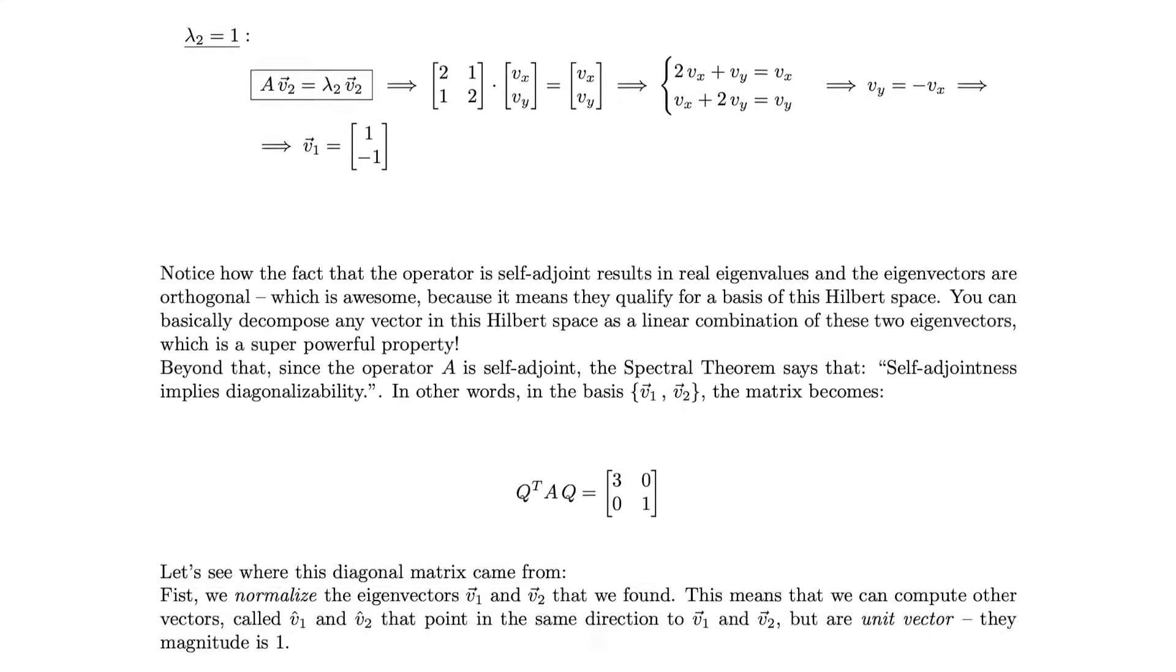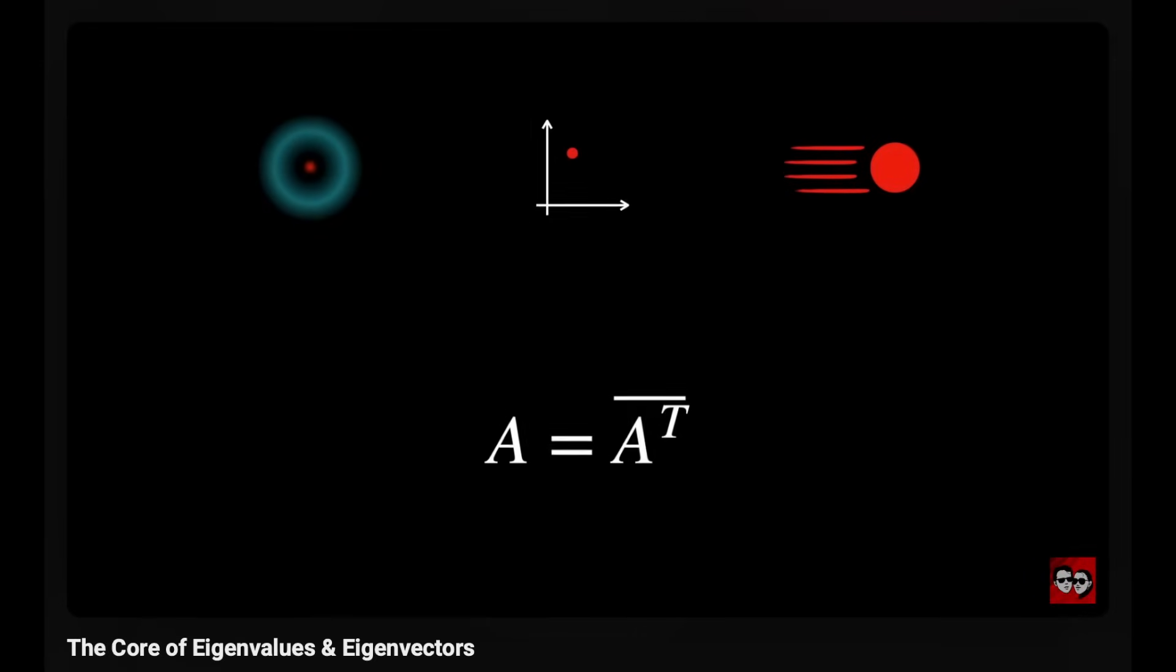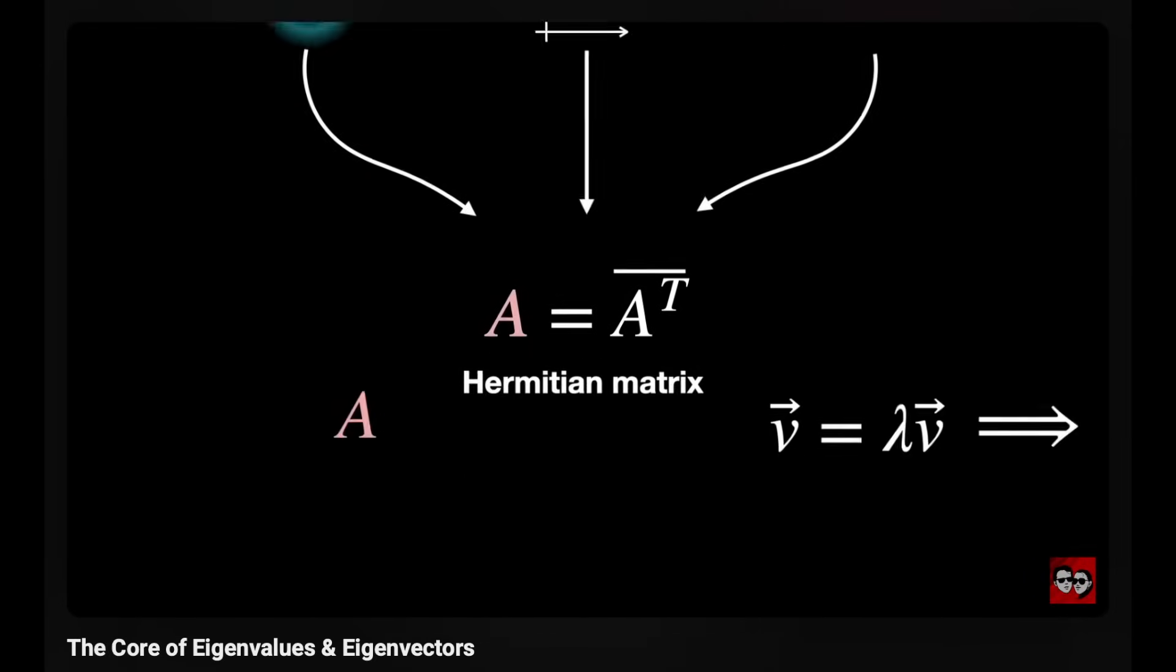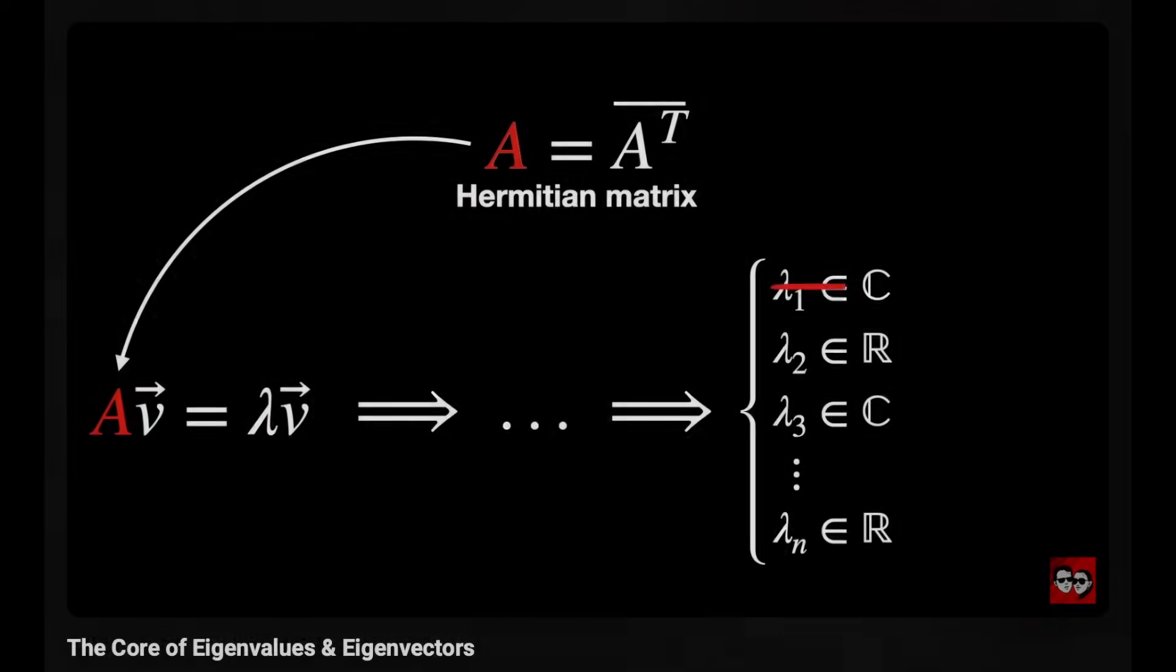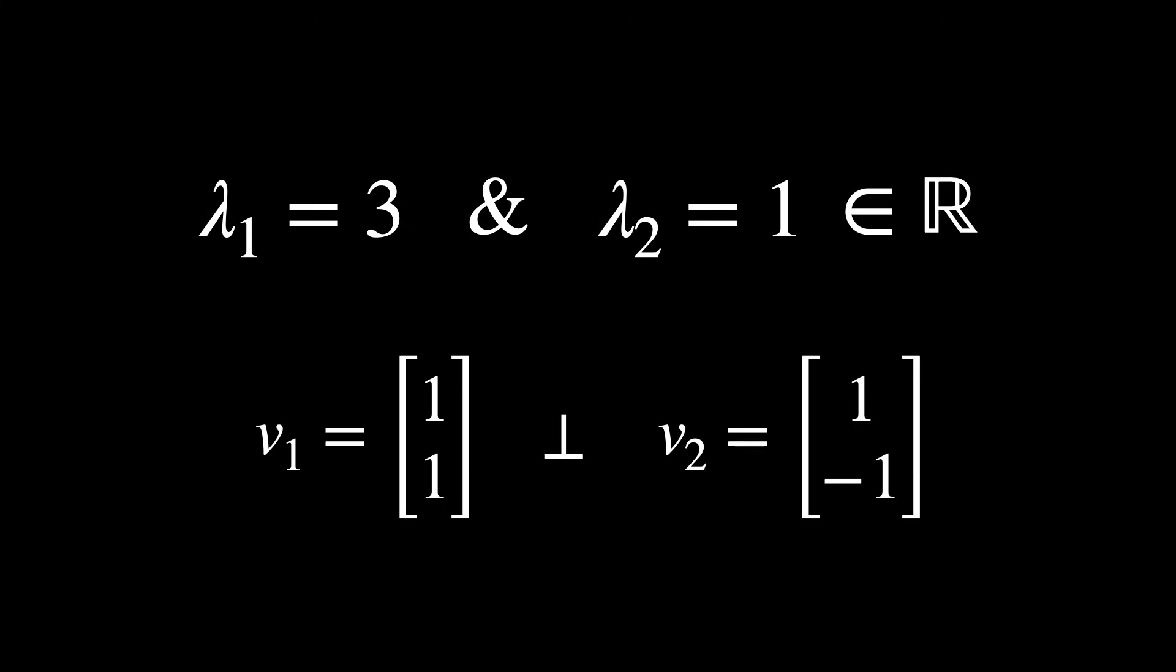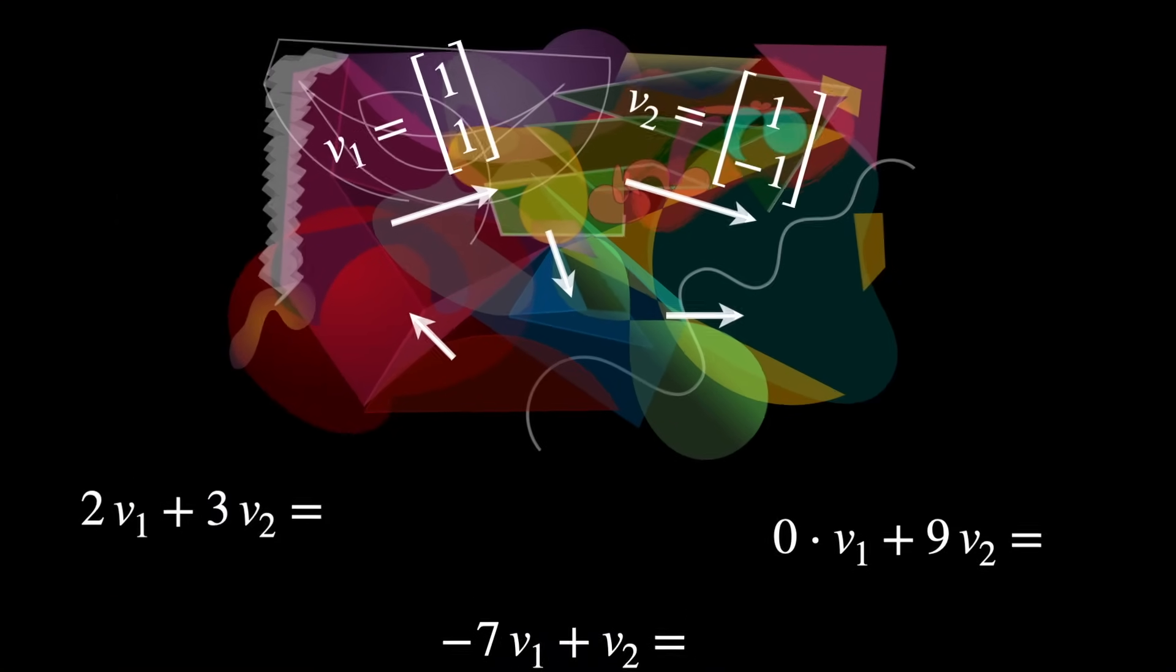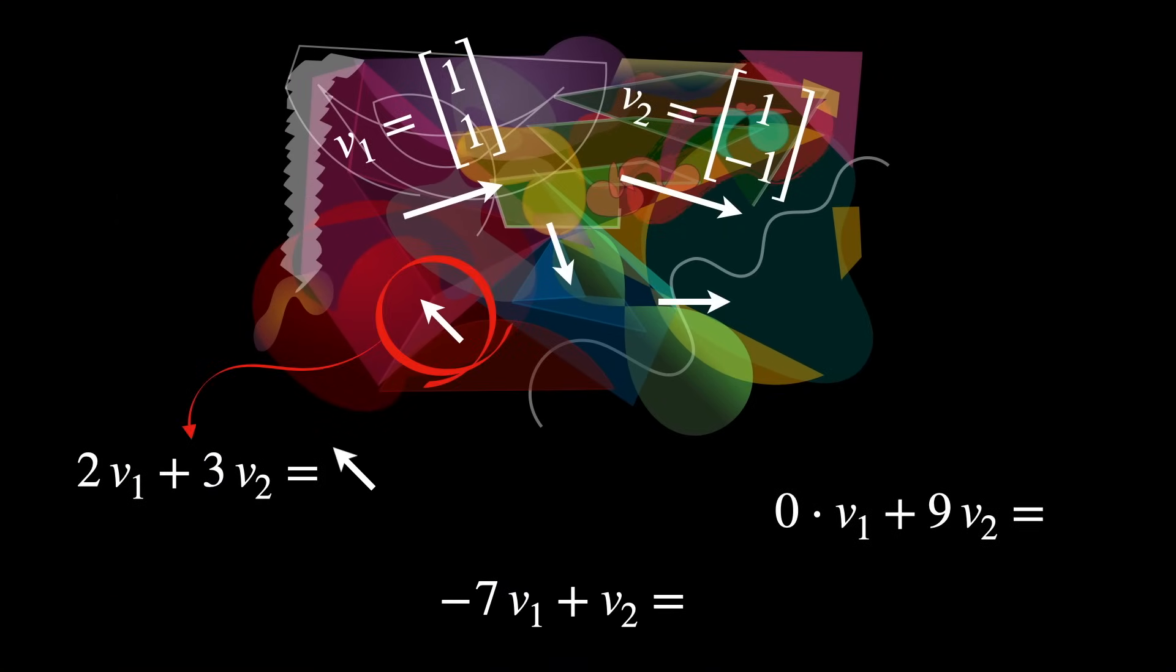If you want to see how we calculated these results, check out the PDF link in the description. And if you want to learn more about eigenvectors and eigenvalues, check out this video in the channel. Notice how the fact that the operator is self-adjoint results in real eigenvalues and the eigenvectors are orthogonal, which is awesome because it means that they qualify for a basis for this Hilbert space. You can basically decompose any vector in this Hilbert space as a linear combination of these two eigenvectors, which is a super powerful property.